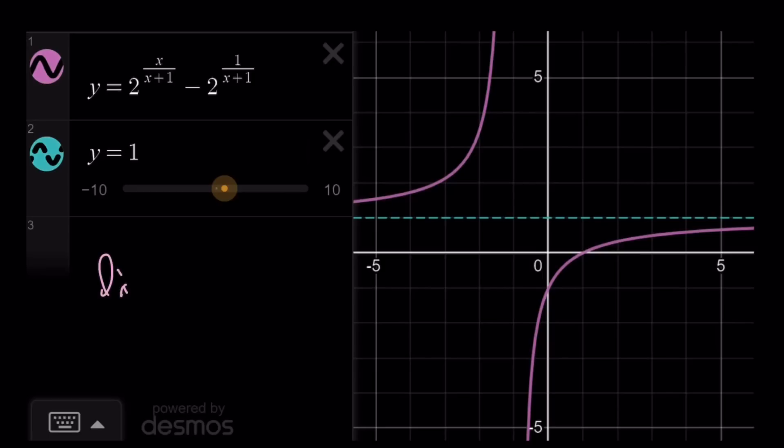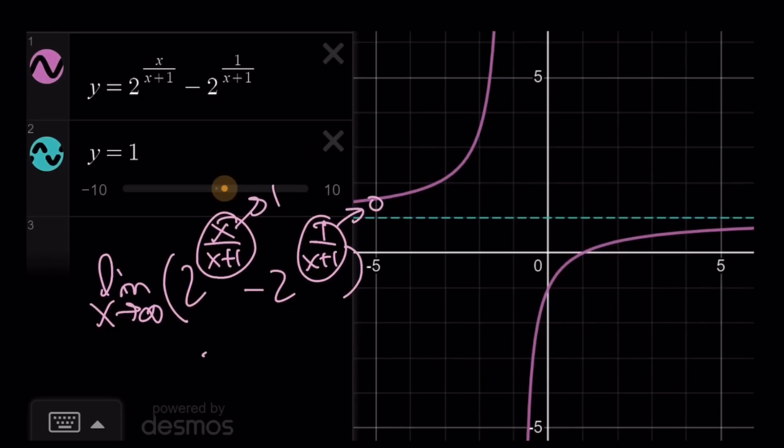If you take the limit as x approaches infinity, notice that you take the limit for the exponent. This becomes 1, and this becomes 0. So, it's like 2 minus 1 equals 1. So, as x approaches infinity, y approaches 1, which means we have a horizontal asymptote. That's the dotted line. As x approaches negative infinity, the same thing.